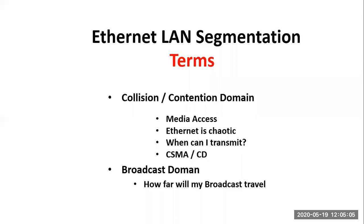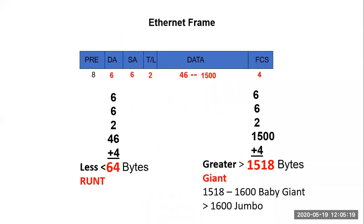Broadcast domain is how far will my broadcast travel? We tried to limit the scope of our collision domain to increase media access, but we also try to limit the scope of the broadcast domain, because Ethernet has several broadcast-related services like DHCP — Dynamic Host Configuration Protocol — and Address Resolution Protocol. They're constantly used and very common in our networks today, so we limit their scope with broadcast domains.